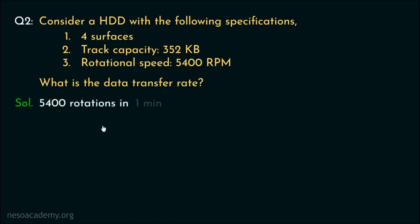5400 RPM means 5400 rotations in 1 minute or 60 seconds. Therefore, for one rotation, the time taken will be way lesser than that. Hence, 60 by 5400 seconds which equates to 1 upon 90 seconds.